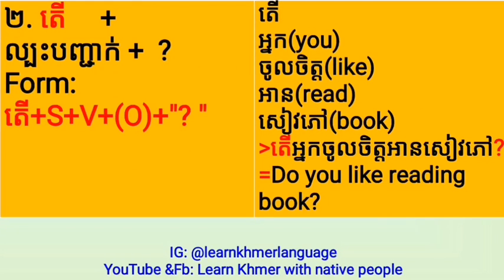The second type of question sentence uses the question word 'Ta.' The form is: Ta plus Object plus Verb plus Object (if there is one) plus Question Mark. For example: 'Ta, nea, cho chất and siu phal.' Here 'Ta' is the question word, 'nea' means you, 'cho chất' means like, 'and' means read, and 'siu phal' means book. So we say: Ta, nea, cho chất and siu phal?